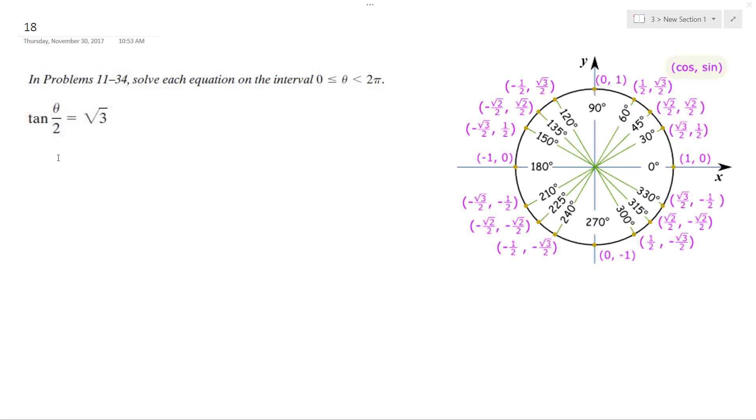All right, solving this problem, I'm going to take the inverse tangent of both sides. So I get theta over 2 is equal to arctangent of root 3.